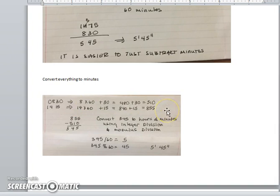To convert 1415 to all minutes, it's 14 hours times 60 plus 15 minutes, so you get 840 plus 15 is 855. Then we can just subtract the minutes: 855 minus 510 minutes gives us 345 minutes.